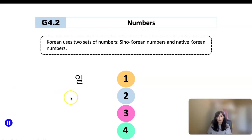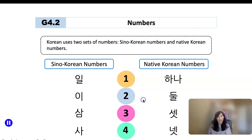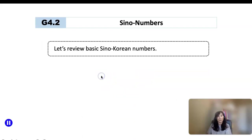1, 2, 3, 4 — those are Sino-Korean examples. Here's an example of native Korean: 하나, 둘, 셋, 넷. We are going to deep dive into these two sets of numbers today — Sino-Korean numbers and native Korean numbers.